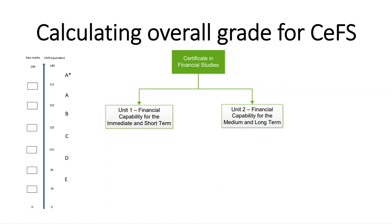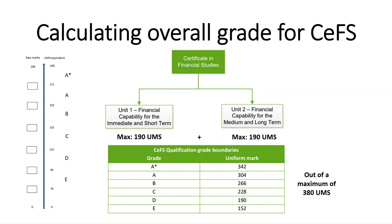So, how do you calculate the overall grade for Certificate in Financial Studies? You add whatever UMS you got from Unit 1 — the maximum you could have got is 190 with 100 out of 100 — and you add what you got for Unit 2, likewise 190 being the total maximum mark. Then you apply it to this grid here. 190 plus 190 is out of a maximum of 380 UMS points. If you get over 342 — so on average over 171 in each of the units — you will come out with an A star. If you get over 304, which you calculate by 152 times 2, the UMS grade boundary for an A times 2, you get 304, which is an A. You just go down the table from there.